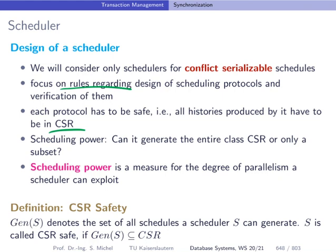An interesting discussion in this sense is the scheduling power if this scheduler is able to generate the entire class CSR only a subset. Of course, we want to have the scheduler to allow a maximum parallelism or degree of freedom in allowing concurrent transactions. The scheduler that is allowing only serial schedule is also CSR safe, but it doesn't really make sense in practice to use it because it would be too restrictive. So we want to have a maximum degree of parallelism and still the schedule should be guaranteed to fall into the class CSR.